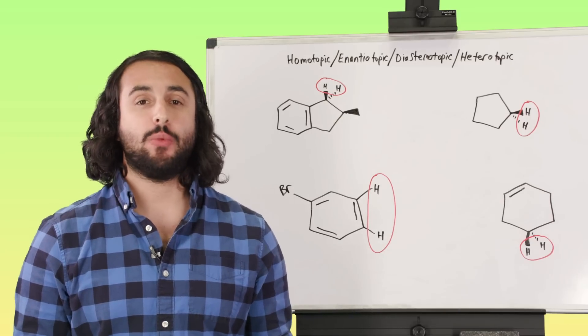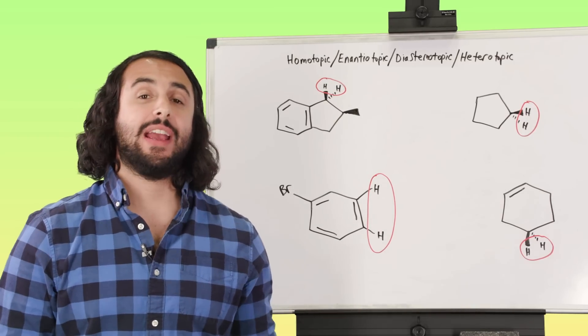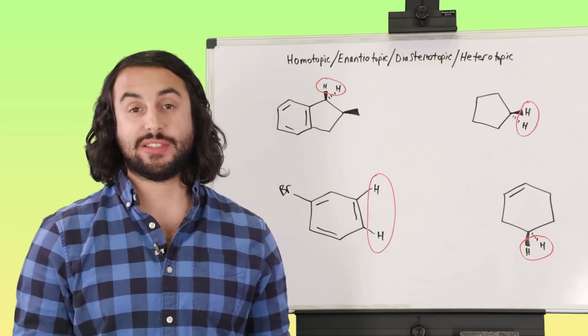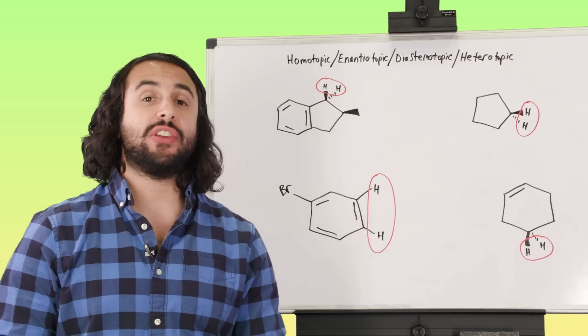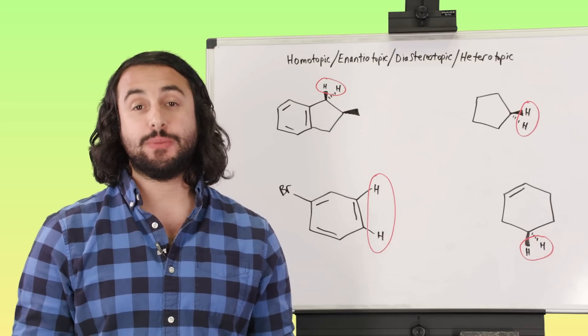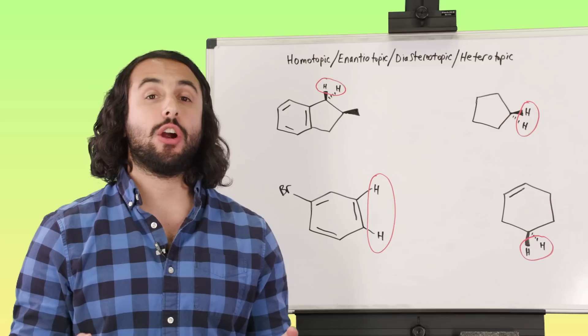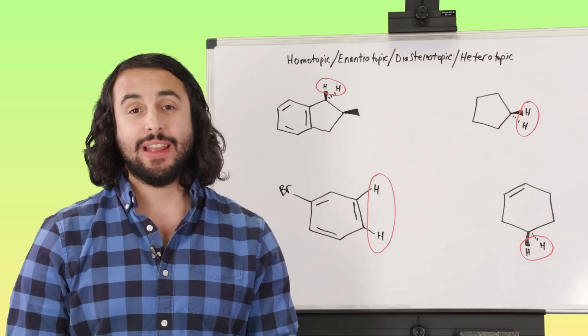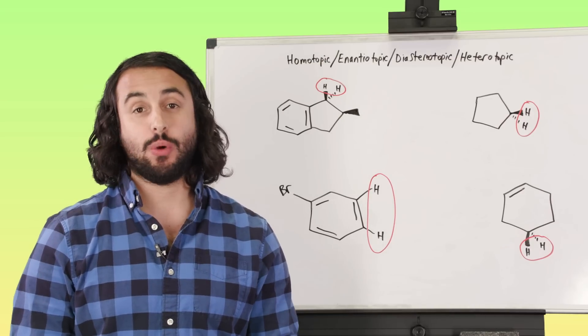Hey guys, so for this practice problem we have a few molecules and each has a pair of protons circled. What we need to do is determine the relationship of these protons. We want to say whether they are homotopic, enantiotopic, diastereotopic, or heterotopic.